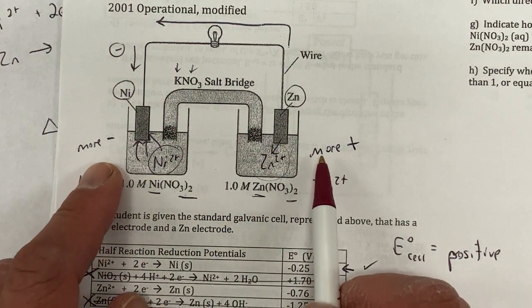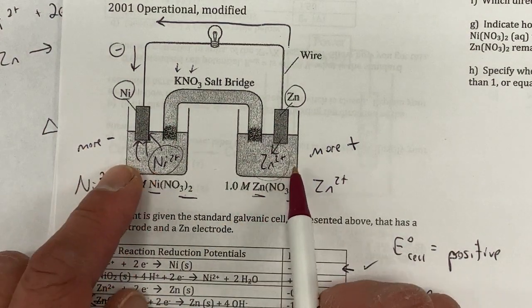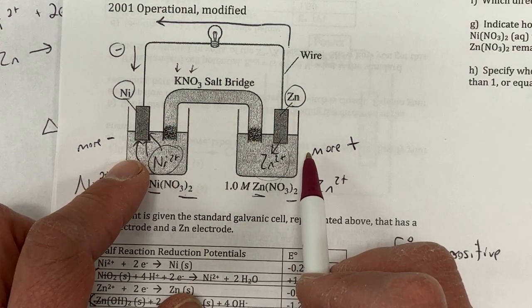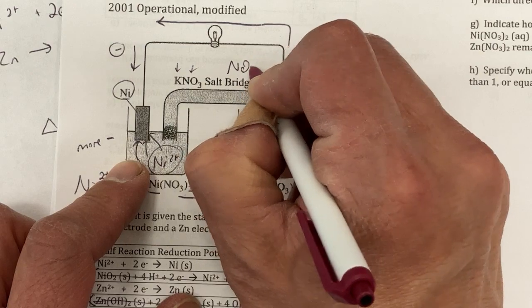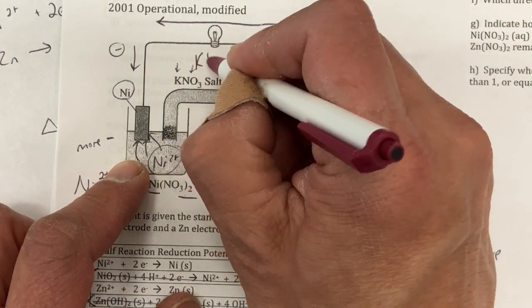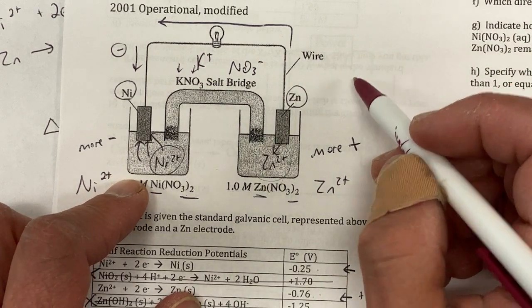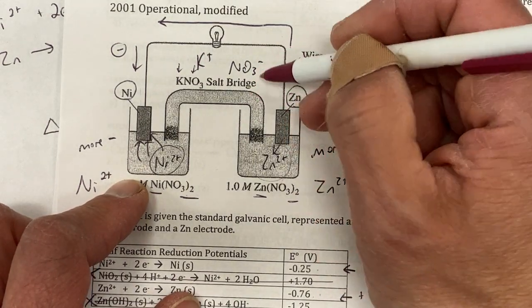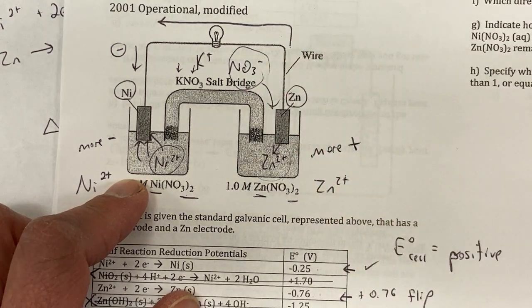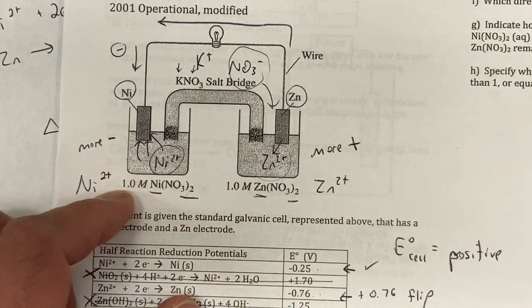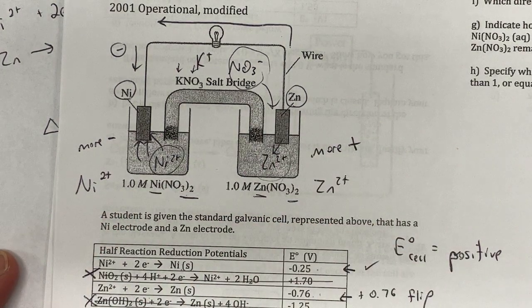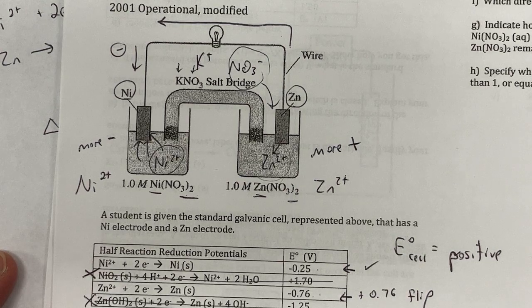Well in order to keep these neutral, I need these ions to start shifting and balancing that out. So we know that nitrate NO₃⁻, that's a negative charge, and K⁺ is a positive charge. And if I want them to balance out, well I need more negatives to go to this side here and I need more positives to go to this side here to keep things electrically neutral. So that is the direction that the ions flow in the salt bridge.